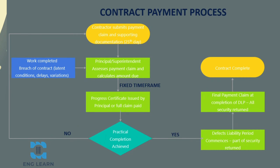The payment process begins with the contractor submitting a claim and supporting documentation — this typically happens monthly by a specific day of the month. The principal and superintendent then need to assess the claim to calculate the true amount due, based on the amount of works completed as well as any breach of contract affecting the amount due through latent conditions, delays, or variations. This is typically a legal obligation to ensure contractors are treated fairly and paid on time, preventing clients from unfairly withholding payment. If the principal does not respond in time, the contractor will typically be owed payment of the full claim.